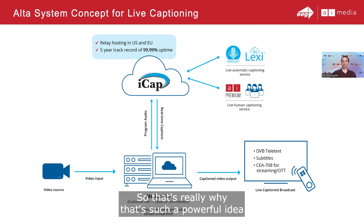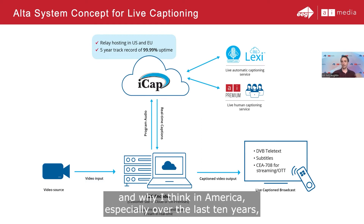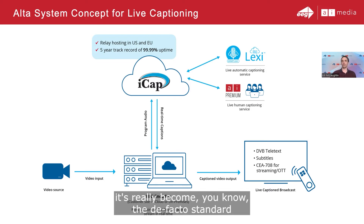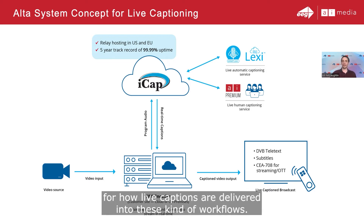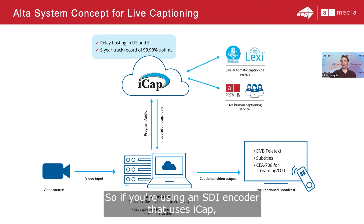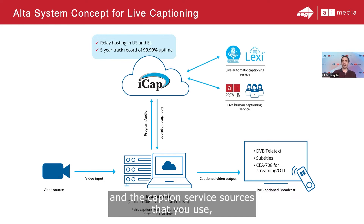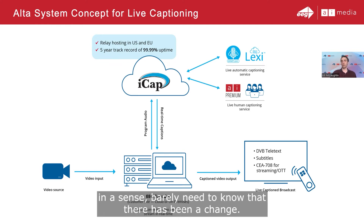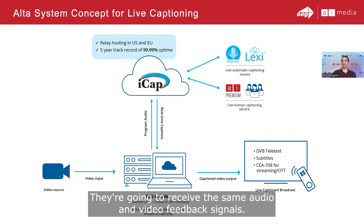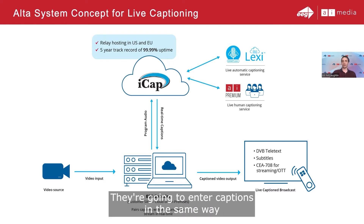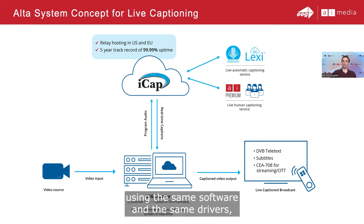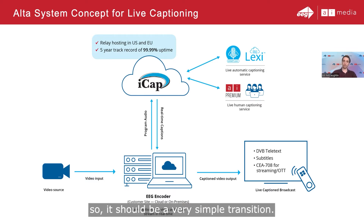This has the benefit that the EEG encoder or Alta program doesn't have to be modified or have something additional purchased to switch between different caption service sources. As long as they use iCap, it's all just plug and play. There isn't a situation where you need to handle different VPNs or network connectivities to change vendors, work with multiple vendors, or use automatic captioning sometimes and human captioning other times. That's all abstracted through iCap — which is why it's become the de facto standard in America over the last 10 years for how live captions are delivered into these kinds of workflows.